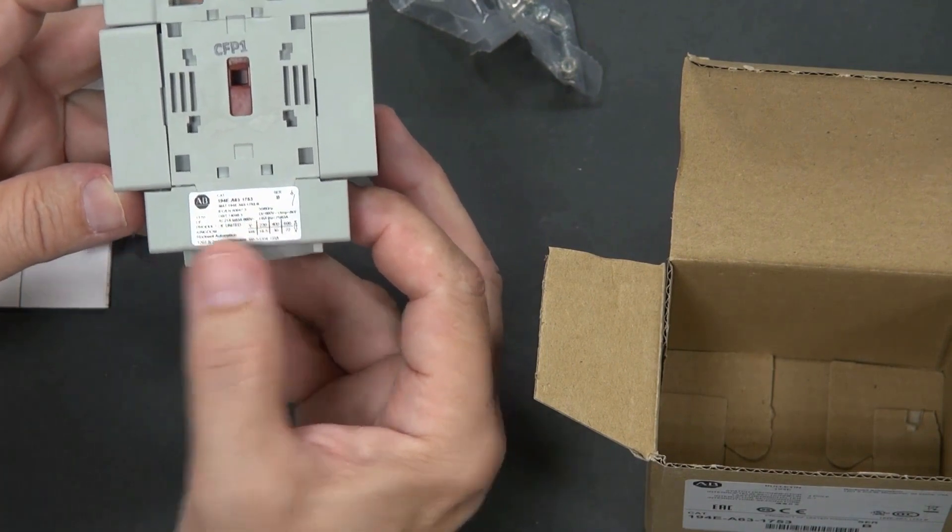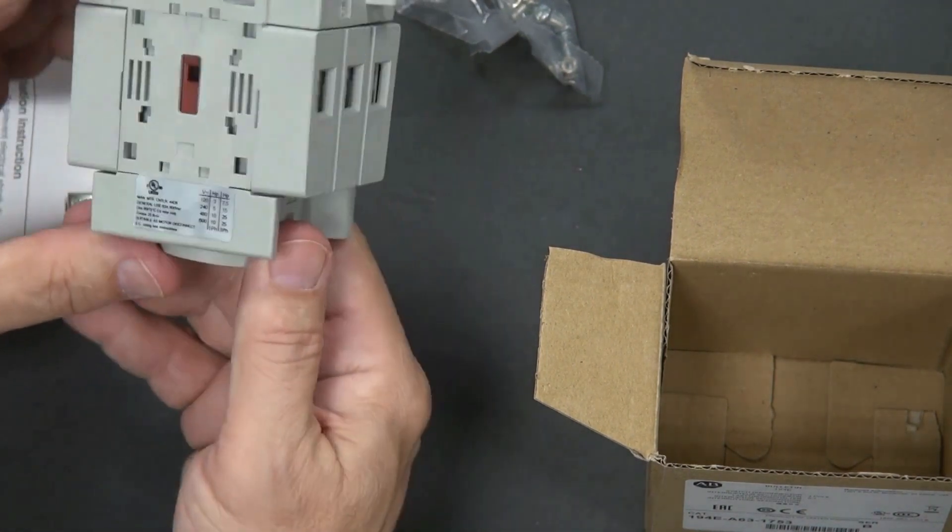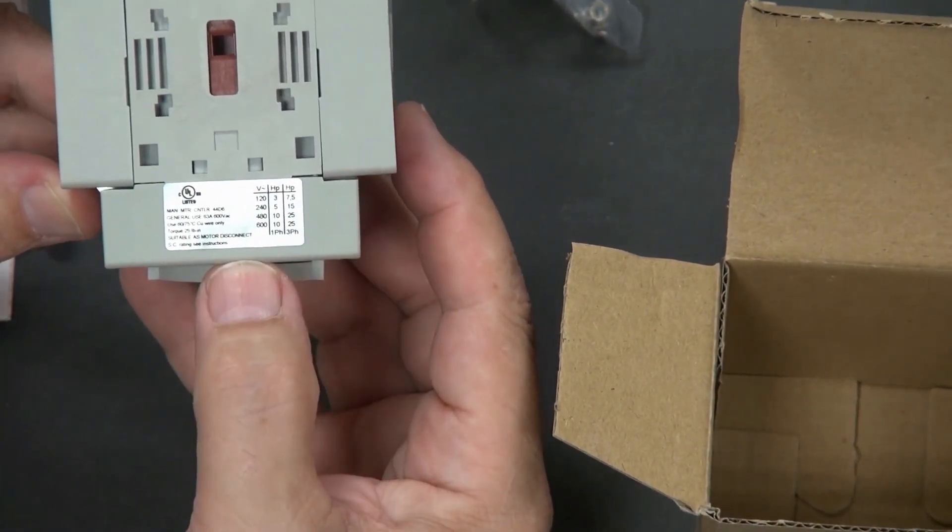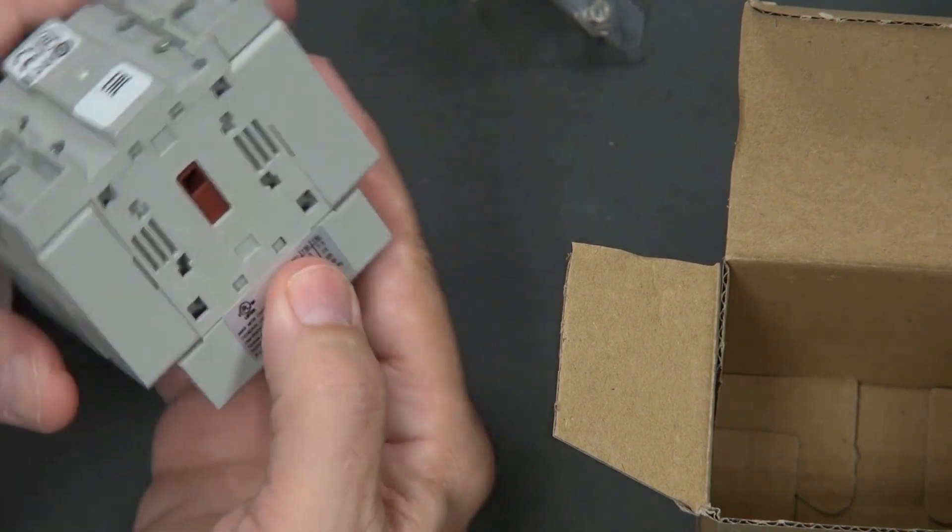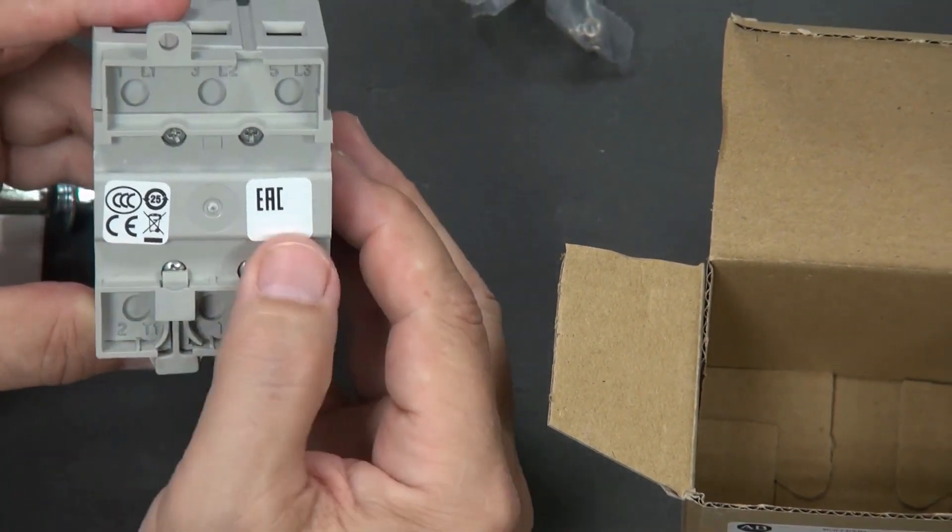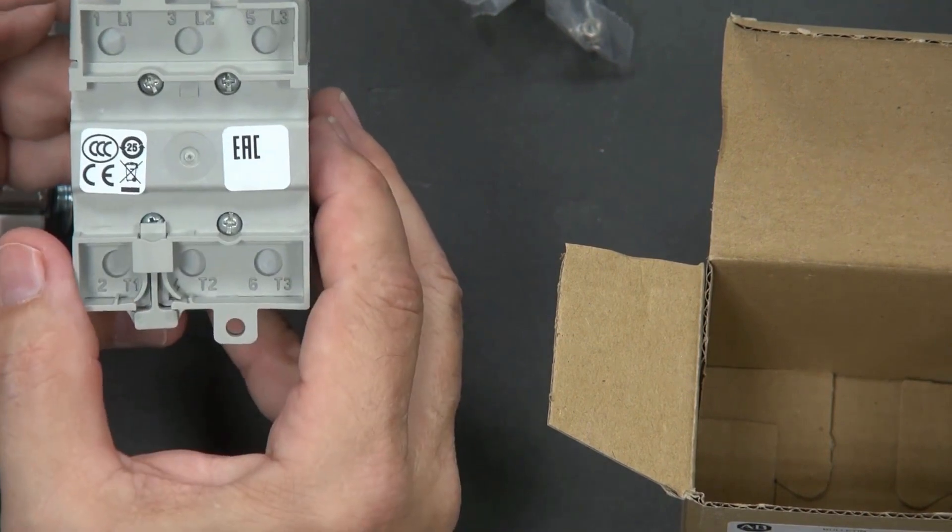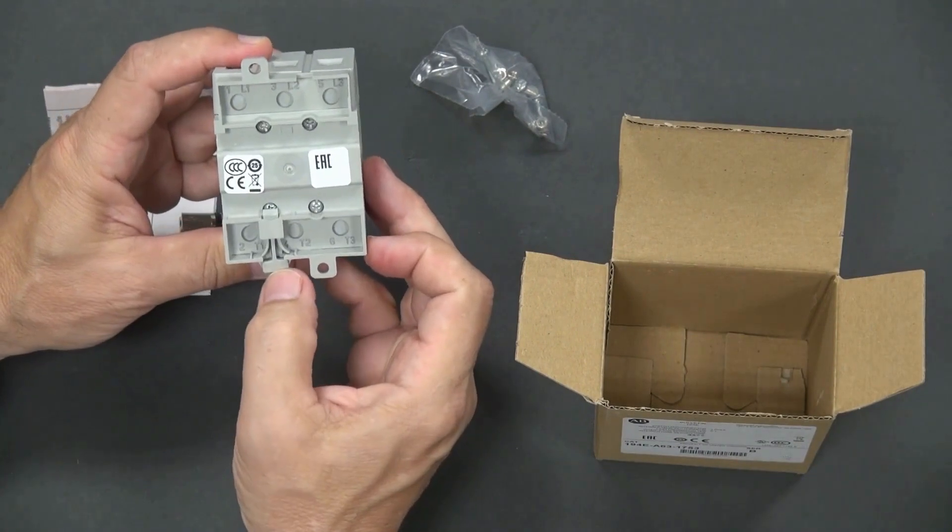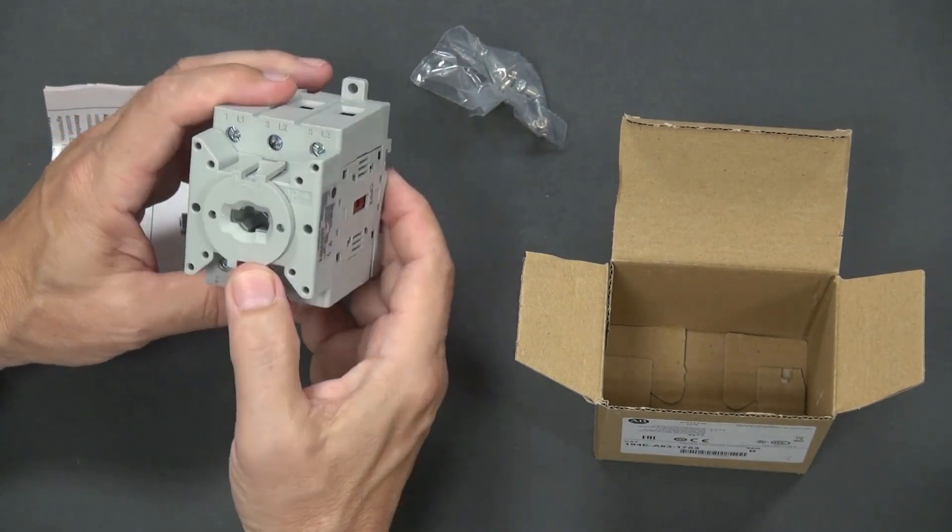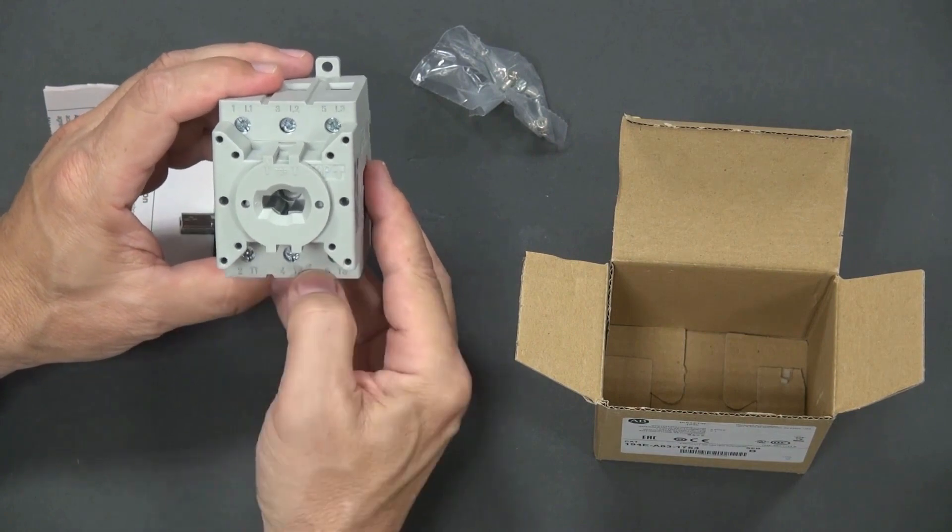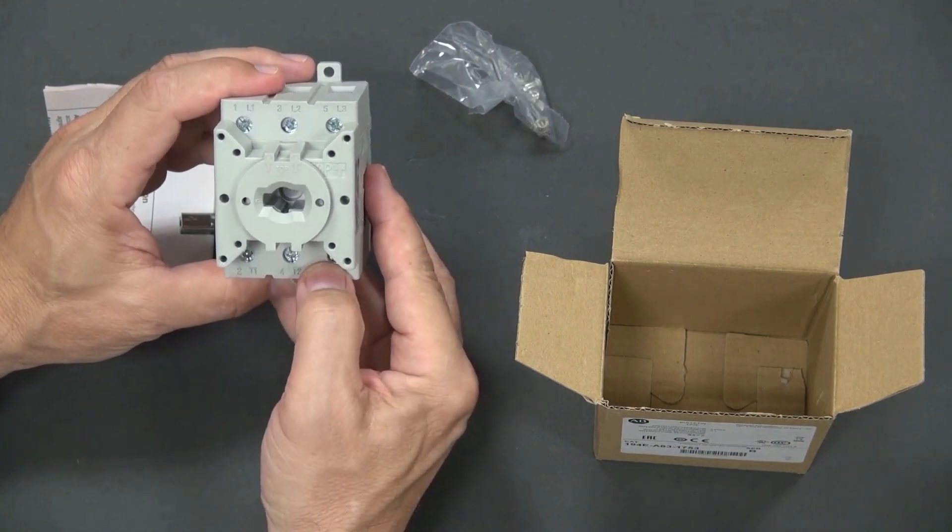We flip it over, and here we see the relevant UL ratings for the switch. Also, we ran out of room on the product to locate relevant certifications, so we've mounted them on the bottom of the switch. Again, this is a base mount switch. It accommodates mounting using the supplied fasteners or attachment using the DIN rail adapter. Access to the terminals for the conductors are on the face of the switch.